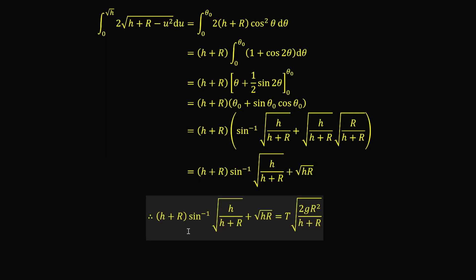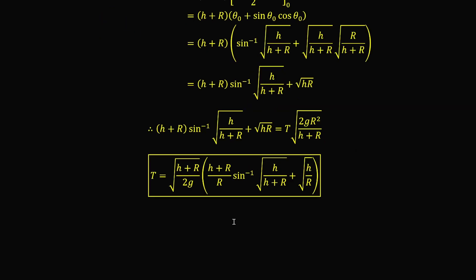Therefore, the left-hand side integral, which we just evaluated, equals the right-hand side T times √(2gr²/(h+r)), from which we can easily solve for T. So there we have it — this is the time for free fall when gravity is non-uniform. Which then begs the question: how does this solution behave?